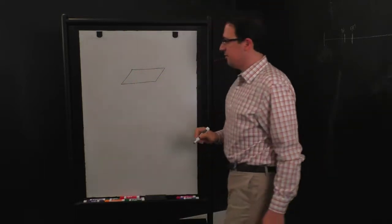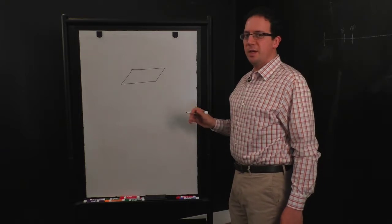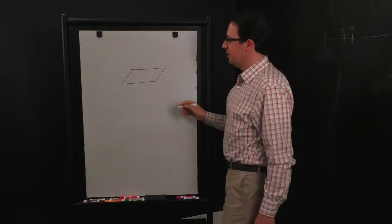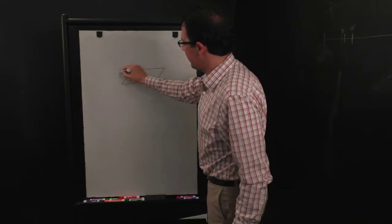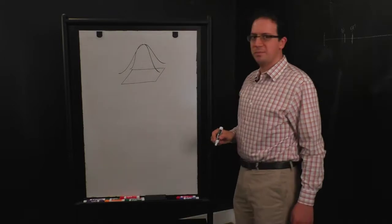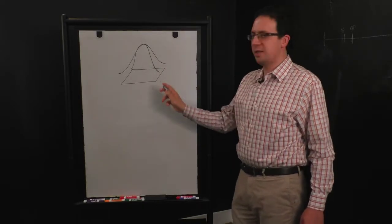So you have some space of possible solutions, and each possible solution has a value and you're trying to optimize this value. So what that looks like is some sort of landscape sitting above this space of solutions.